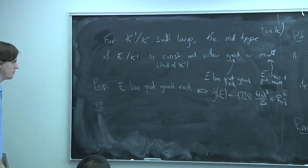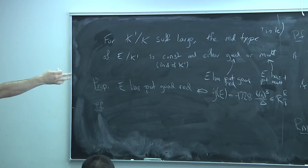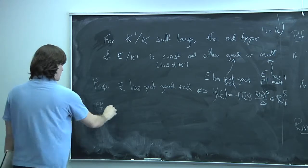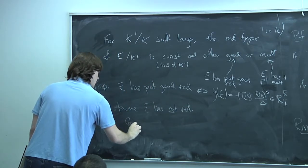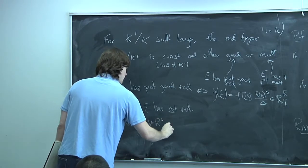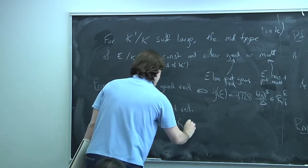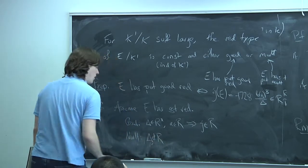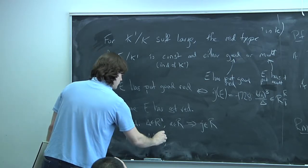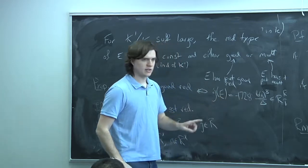Here's the proof. The j-invariant is an invariant of the curve — it doesn't matter what model we pick or over which field we compute it. To prove this, we may first go up to where E has semi-stable reduction, then just check: good reduction corresponds to j being integral and multiplicative corresponds to j being non-integral. In the good case, Δ is a unit and a is in R, so j ∈ R. In the multiplicative case, Δ is in the maximal ideal but a and b are units, so j is not integral.